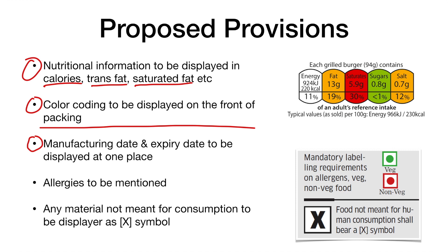The third provision is that manufacturing date and expiry date should be displayed at one place. Currently, on many food products available in India, the manufacturing date is mentioned at one corner and the expiry date is mentioned somewhere else, such as the bottom or the top of the cap. The new rule requires both dates to be at the same place.